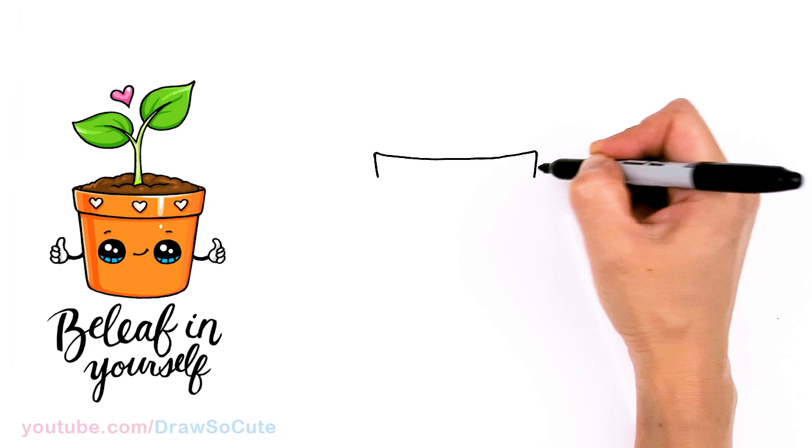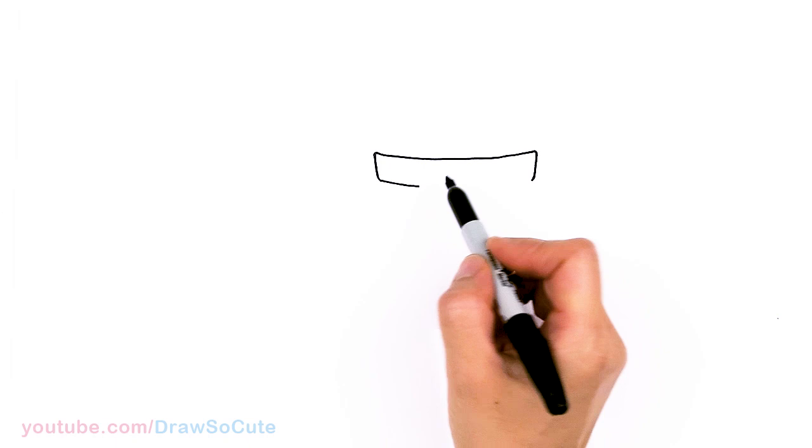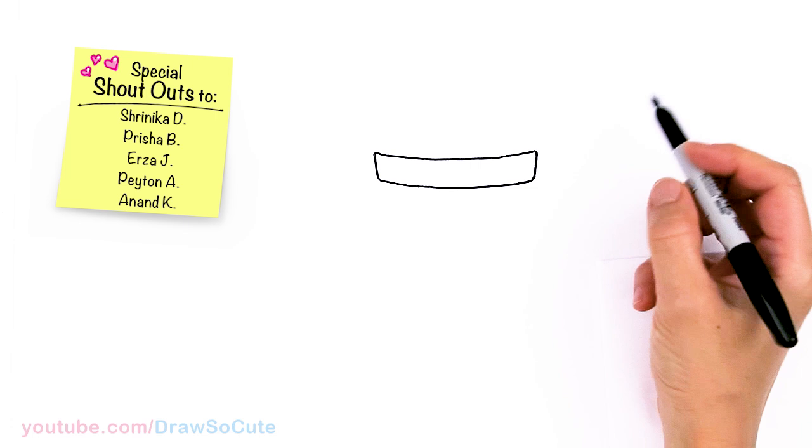So same thing over here, just round it off a tiny bit and then angle the sides. So now that we're pretty even I'm going to come down a little bit and then connect it once again, following my top. So I'm just giving my pot a little rim area.